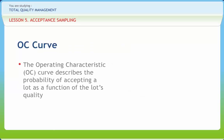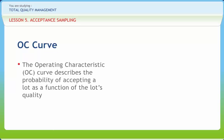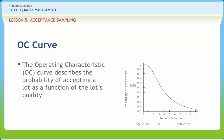The Operating Characteristic OC Curve describes the probability of accepting a lot as a function of the lot's quality. The figure shows the OC curve of the single sampling plan with sample size N equals 50 and acceptance number A equals 1. The bottom axis gives different process percent defectives, and the left axis gives the corresponding probability of acceptance. For example, find 3% on the bottom axis, then draw a line up to the curve and then across to the left axis. The corresponding probability of acceptance is 0.56.